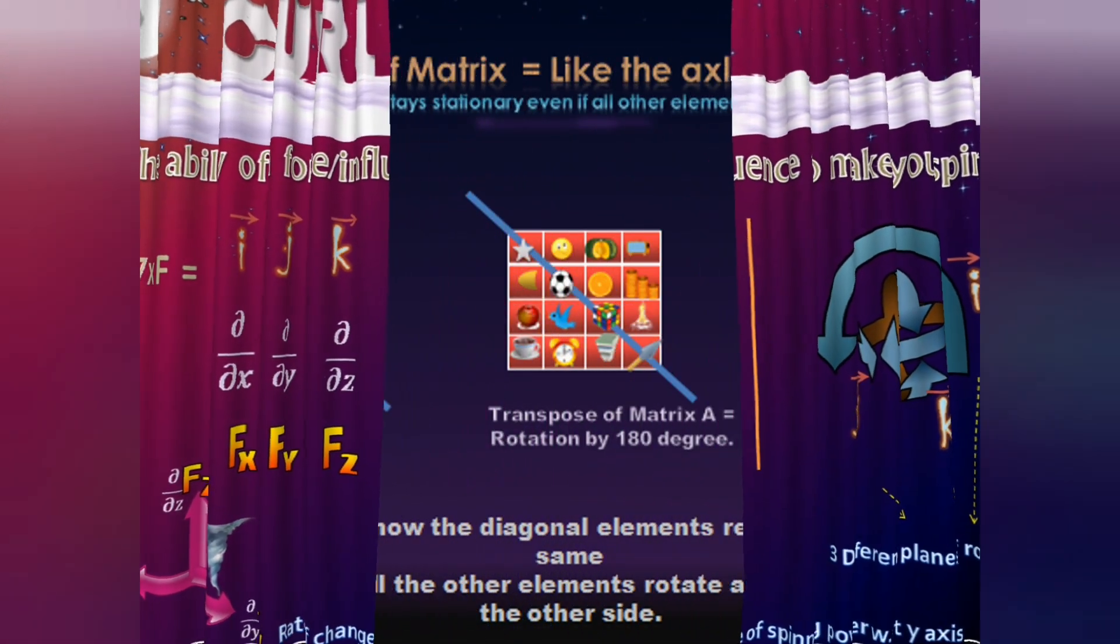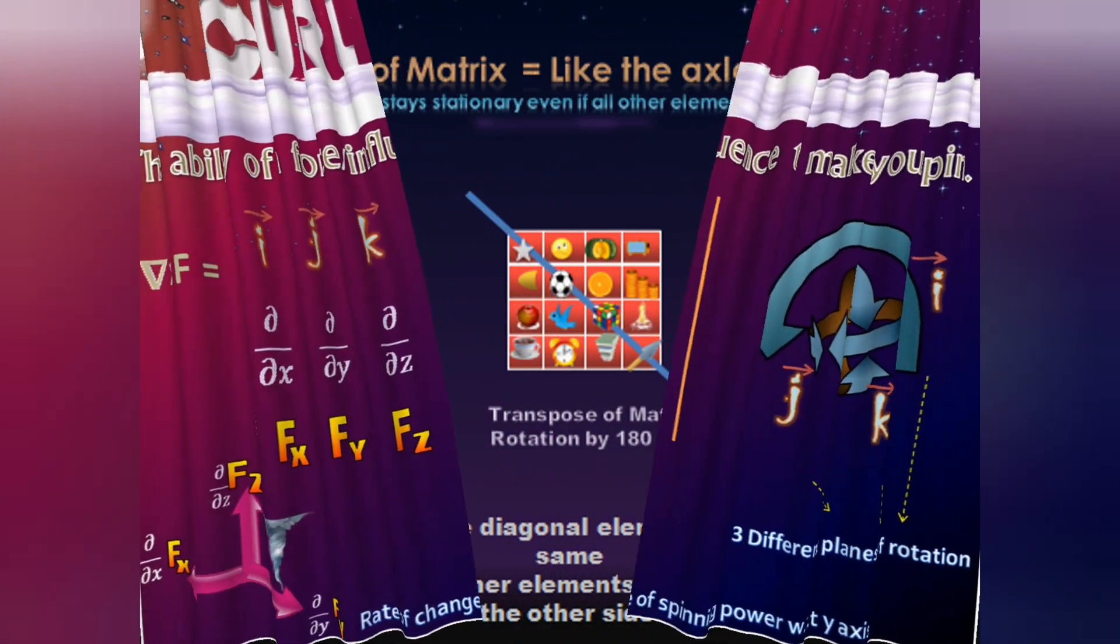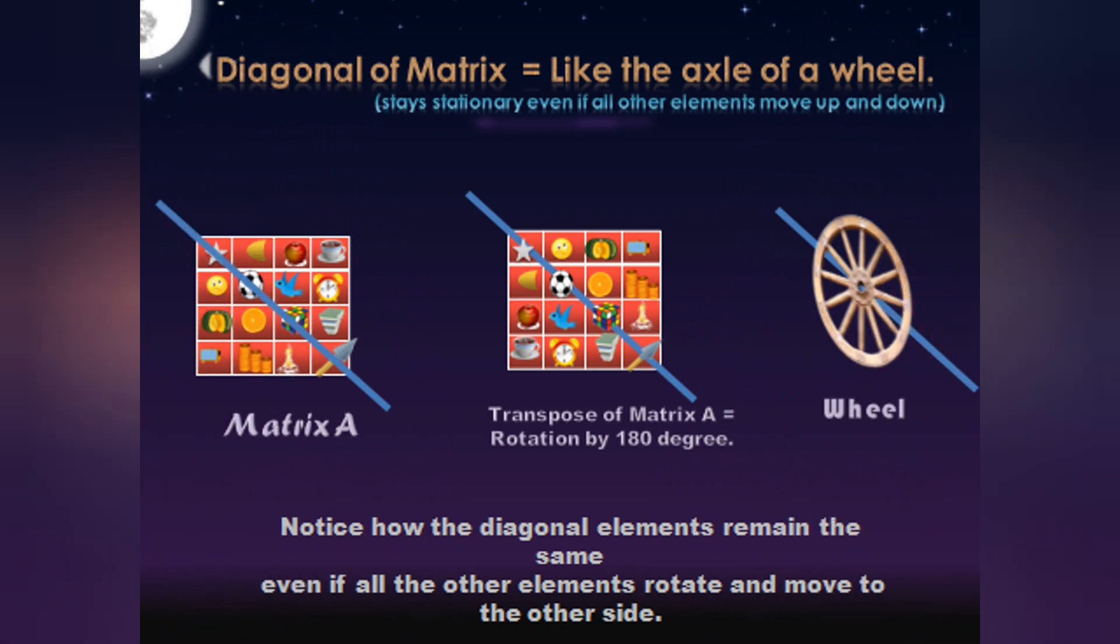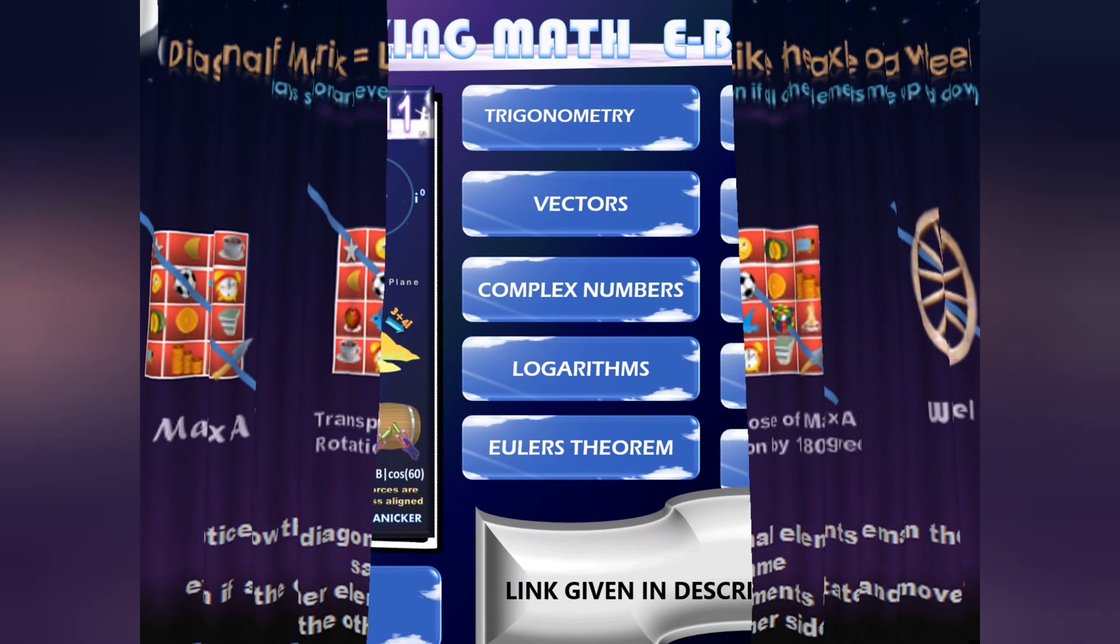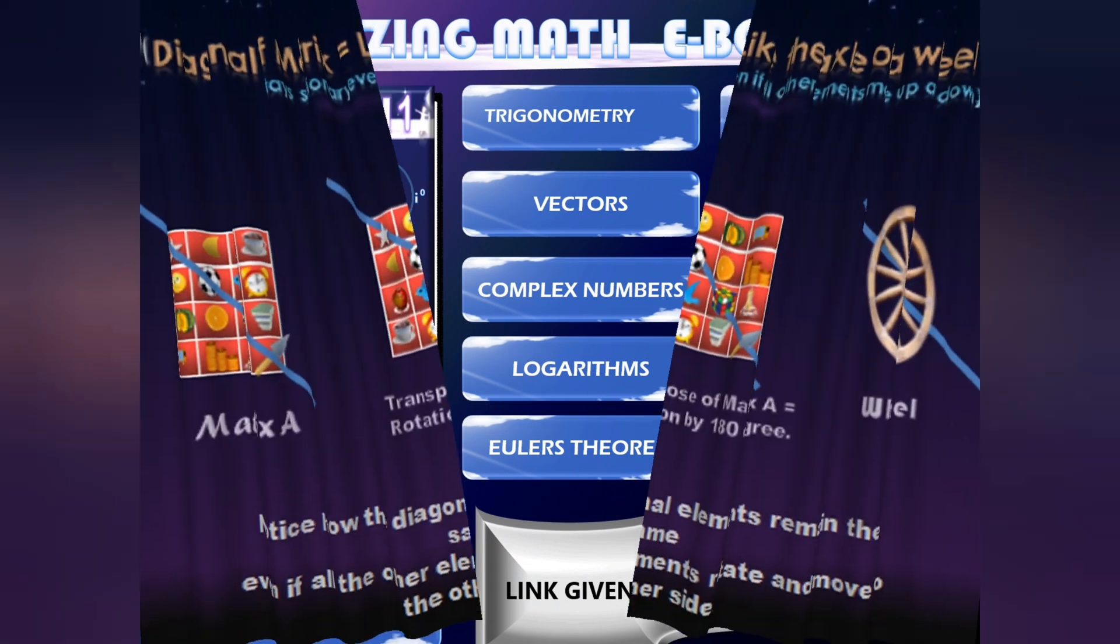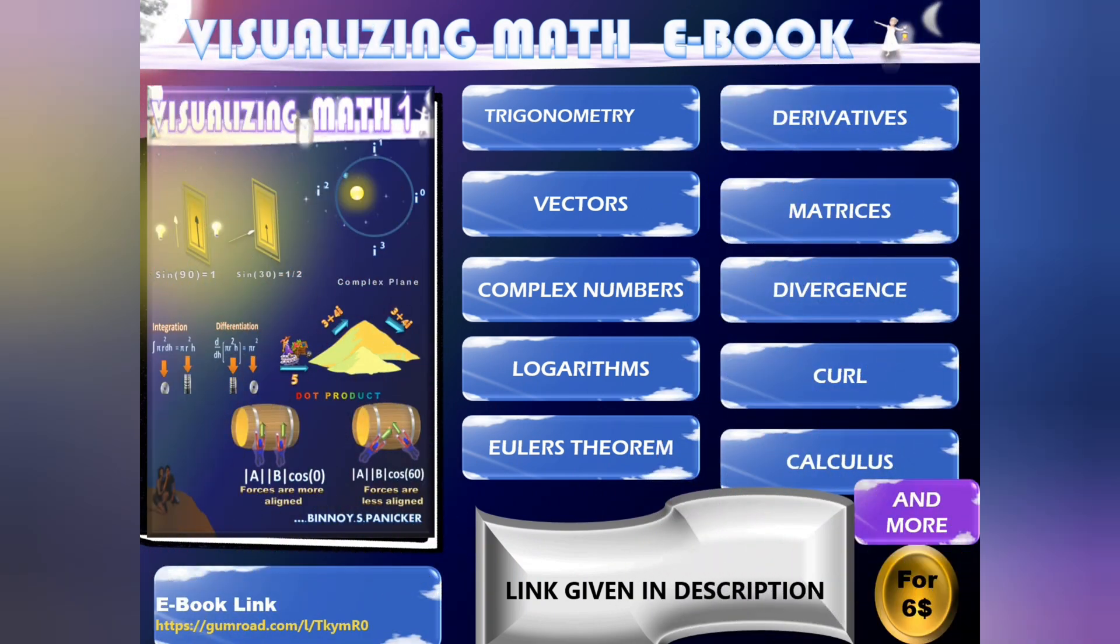What if the diagonal of a matrix is the axis of rotation of a matrix? What if all these intuitive examples and understanding are explained in one single e-book? More such concepts explained intuitively. Link is given below in description.